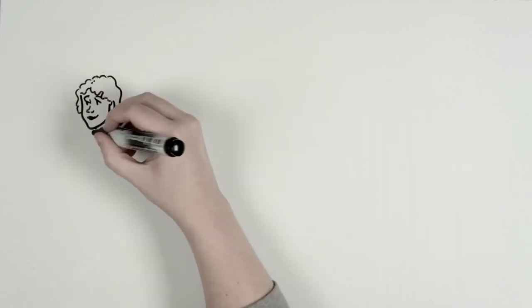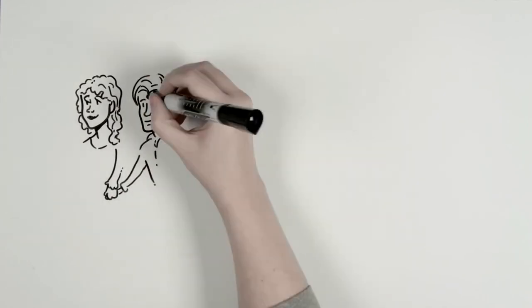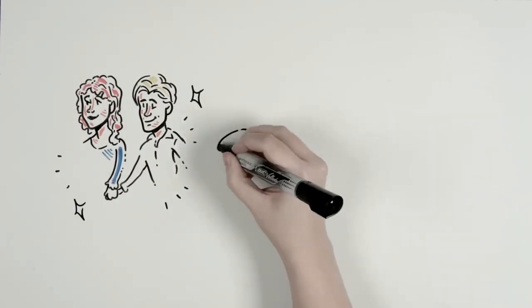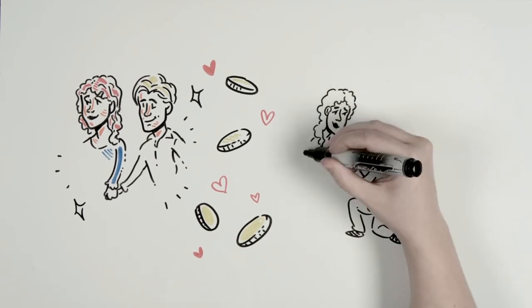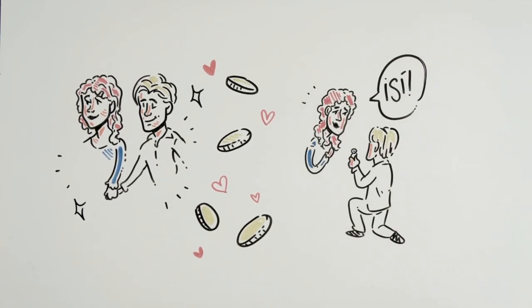They become a popular couple and go to all the social events, having everything it takes to be happy: money and love. In fact, they are so happy that Jack asks Rose to marry him, and she says yes.